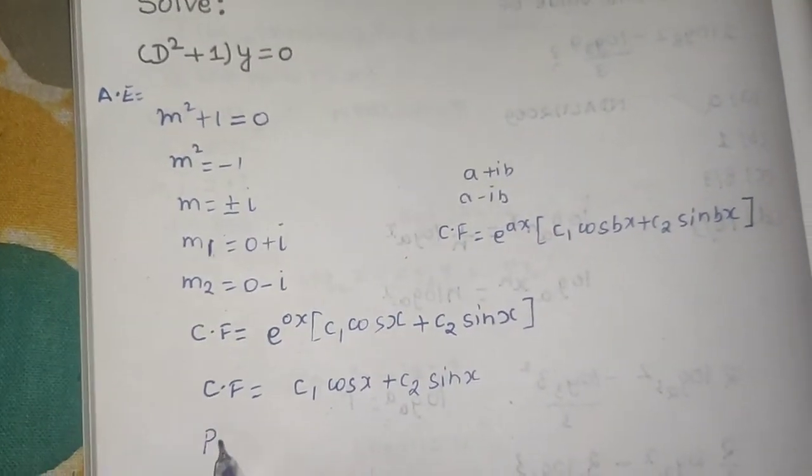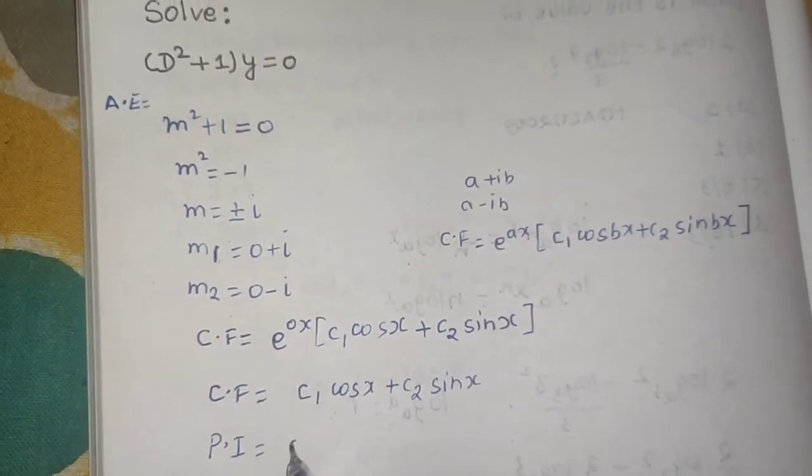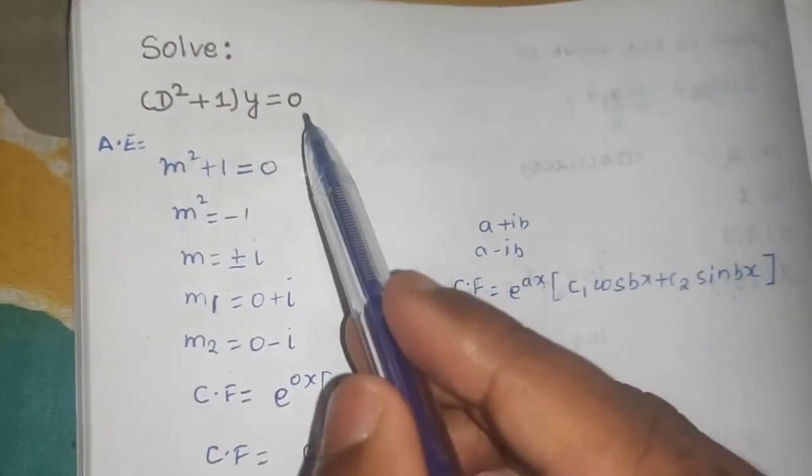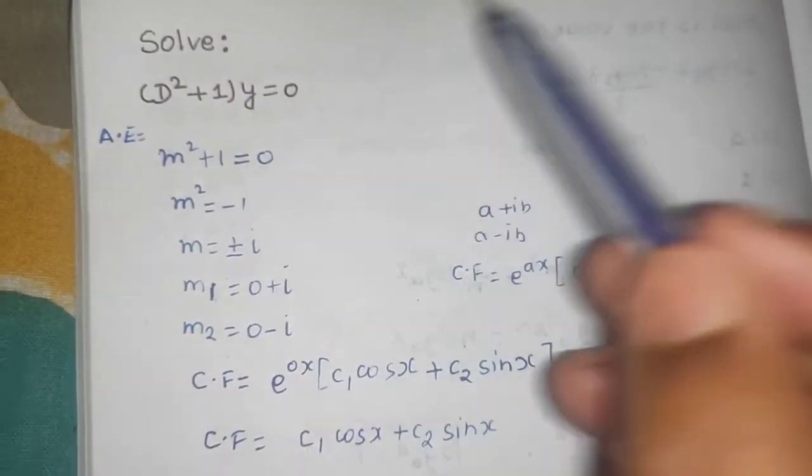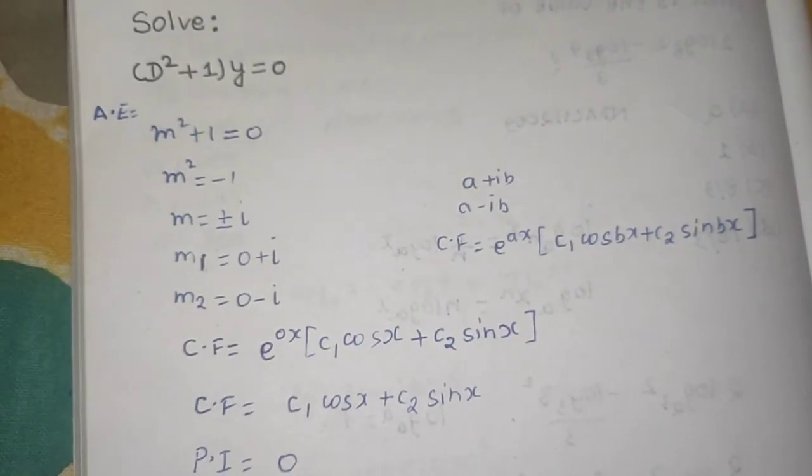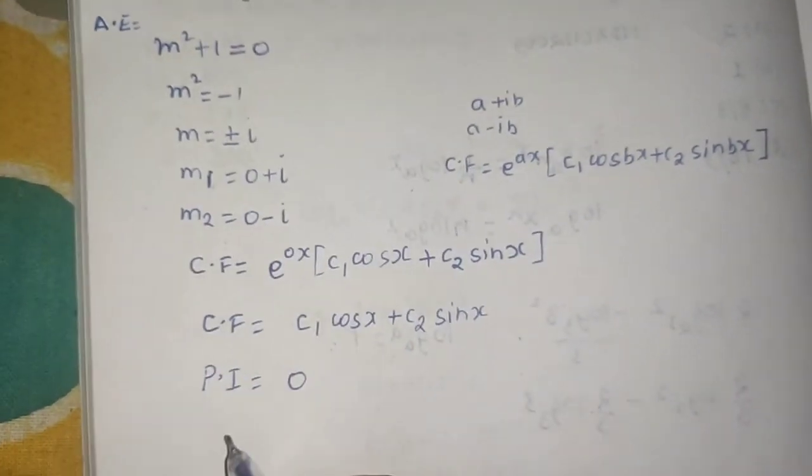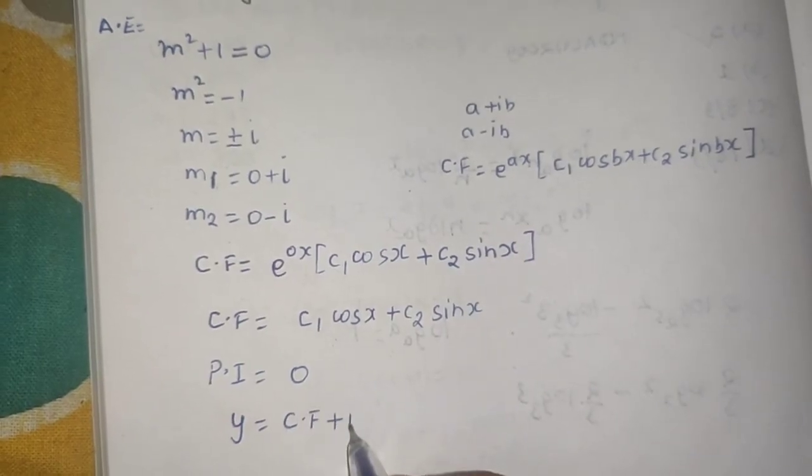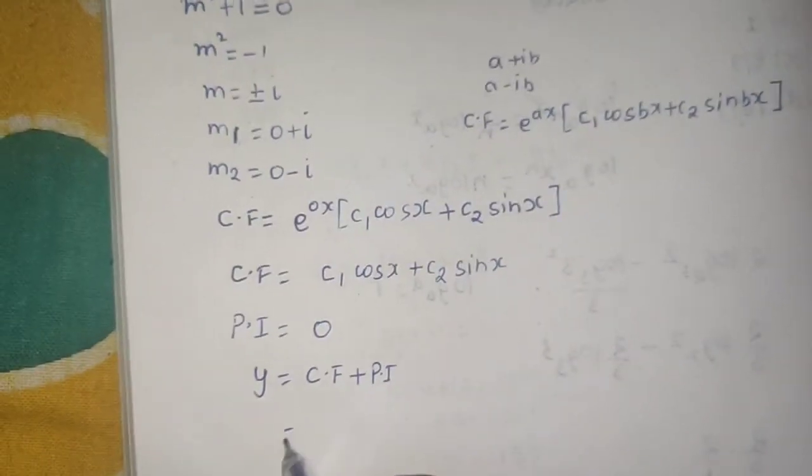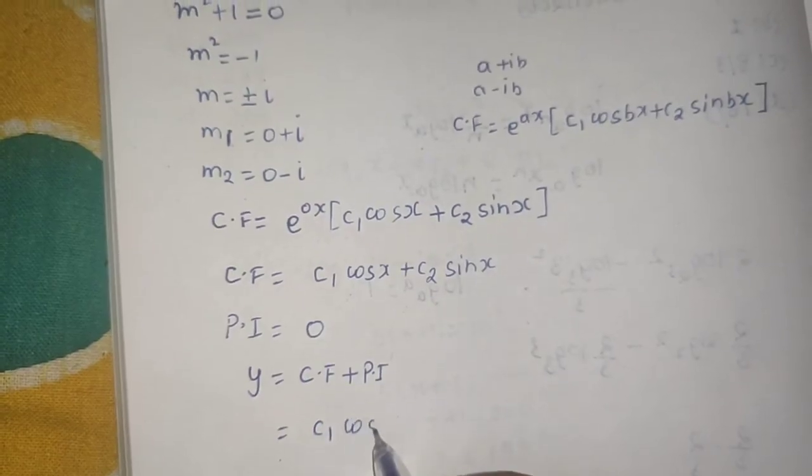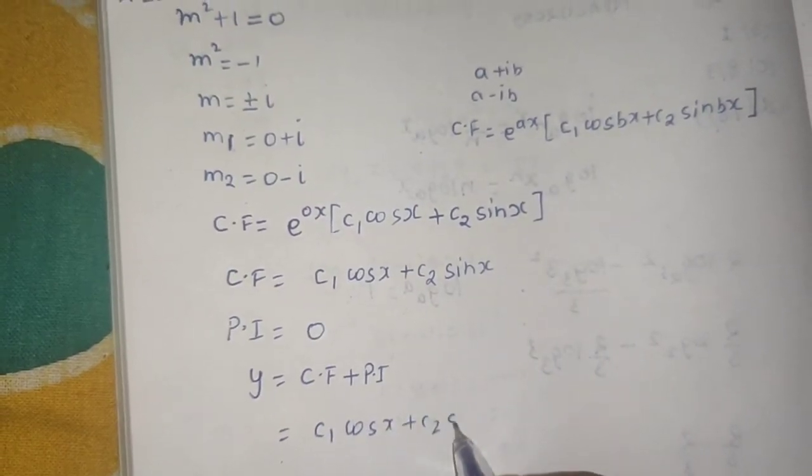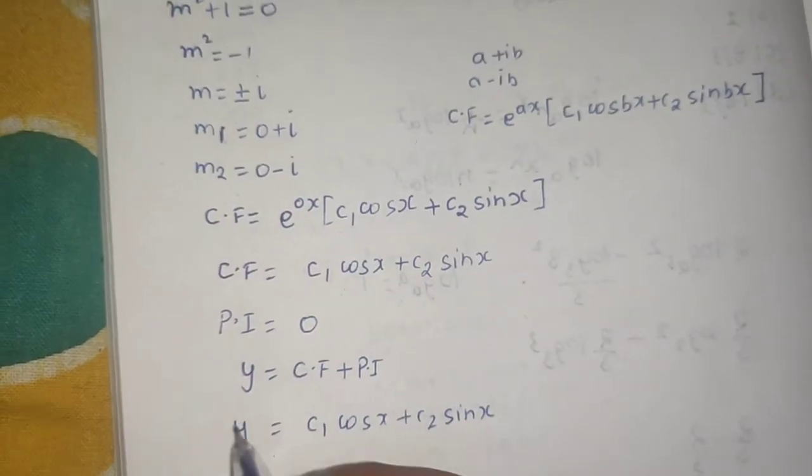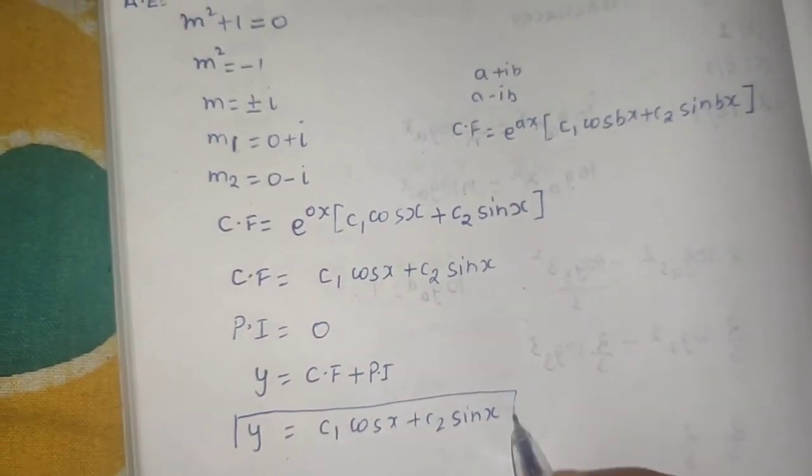In this case the particular integral will be 0 because my RHS is 0 and we find the particular integral from the RHS portion. Now we write our final solution as CF plus PI, so it will be c1 cos x plus c2 sin x plus 0. That means this will be my final answer for this question.